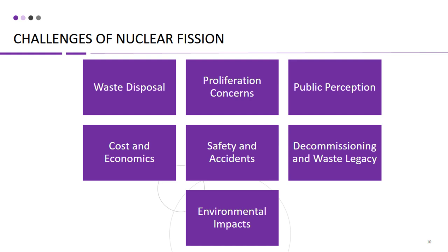Nuclear fission can also raise concerns related to nuclear proliferation, which refers to the potential for the spread of nuclear weapons. The same technology used for producing nuclear energy can also be used to produce materials for nuclear weapons. Therefore, ensuring the secure handling, transport, and storage of nuclear materials to prevent their misuse and unauthorized access is a significant challenge. International efforts, such as nuclear non-proliferation treaties, export controls, and safeguards, are in place to mitigate these concerns, but the risk of proliferation remains a challenge in the context of nuclear fission.